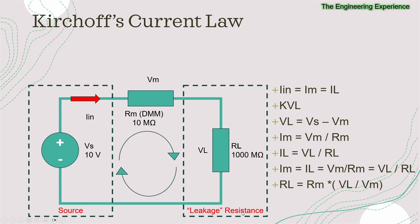Finally, we can substitute the value of VL from what we know. The VM value will be given to us by the multimeter, and VS is a known voltage source. Substituting this equation in, we get RL equals RM times (VIN minus VM) divided by VM. All the parameters of this equation are known, so we can calculate the resistance of the leakage, and from there we can get the current as well.